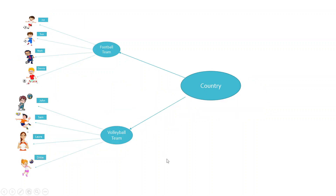Now let us consider that this football team and this volleyball team are both representing the same country. So the performance of the sports of any country depends on the different sports in which the players are participating. The country is now a second order, while the football team and the volleyball team are the first order.